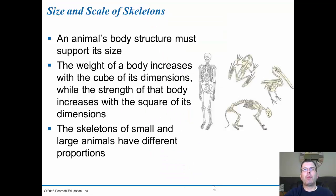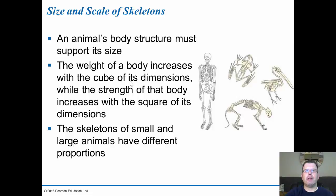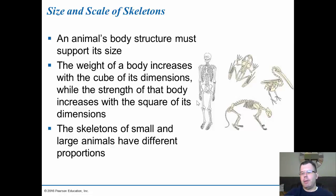The animal's body structure must support its size. The weight of the body increases with the cube of its dimensions, while the strength increases with the square. So weight grows much faster than strength as animals scale up. Small animals have fewer bones since they don't need as much support, while larger animals need more bones to support their weight. In mammals and birds, the position of legs relative to the body is very important for how much weight the legs can bear. The muscles and tendons bear most of the load — this is why athletes pushing too hard suffer tendon and ligament tears.